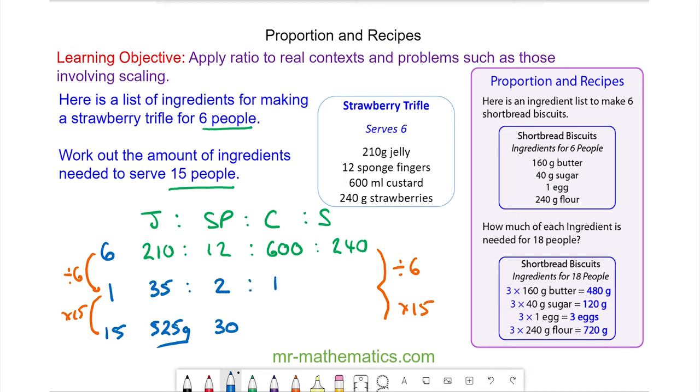For custard, I need 100 milliliters for one person and 1500 for 15 people. For strawberries, I need 40 grams for one person and 600 grams for 15 people.